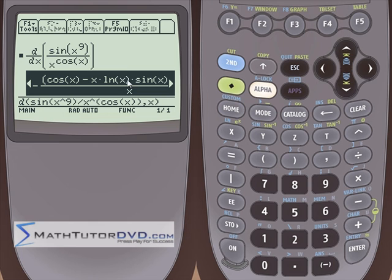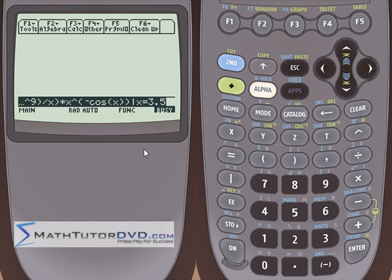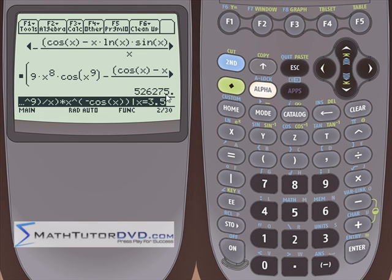It doesn't look that complicated, but it sure is. Take the answer, stick it on the stack. Notice that it scrolls off the screen because it's so big. Hit the vertical pipe symbol. x is equal to, let's say I'm interested in what's going on at x is equal to 3.5. What is the slope of this curve or the slope of the line tangent to this curve at x is equal to 3.5? Hit enter. It'll plug it all in there, and it'll give me a look at this incredibly steep slope, 526,275.